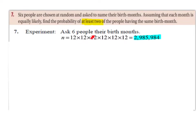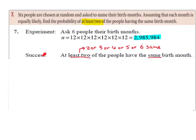And the sixth person also has 12 possible outcomes for their birth month. So 12 by 12 by 12 by 12 by 12 by 12 gives 2,985,984. The success would be at least two of the people having the same birth month. So if we want at least two of them to have the same birth month, this means two, three, four, five, or six having the same birth month.